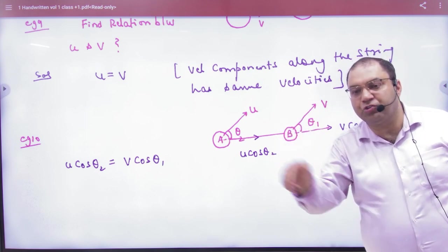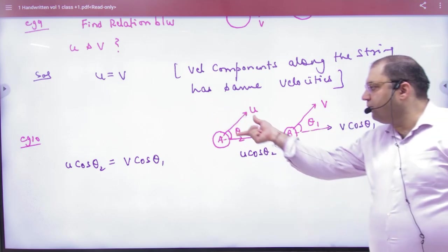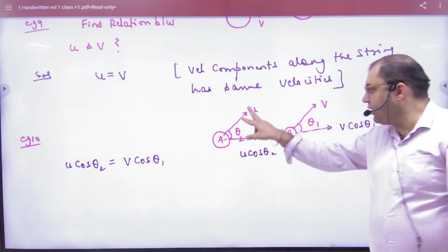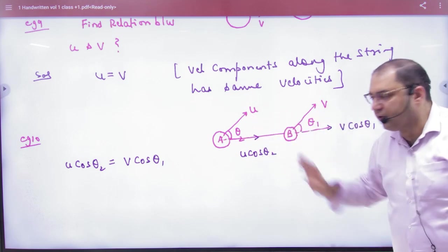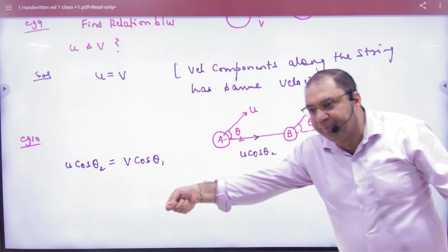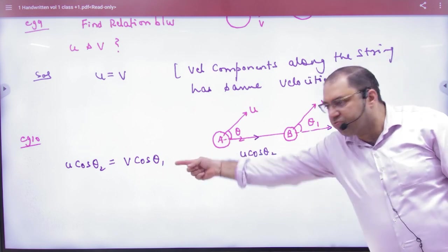I have the rule: string along velocity same. So why do you do this? Velocity component u cos θ and u cos θ₂. These two vectors string along, and the rule is that string along the velocity we have the same. So this is the same magnitude, this is the same.